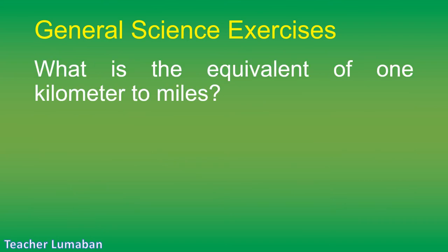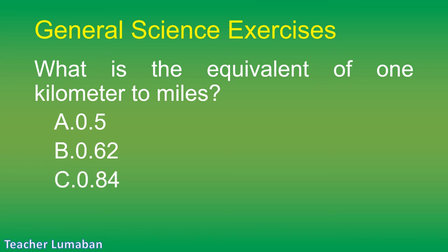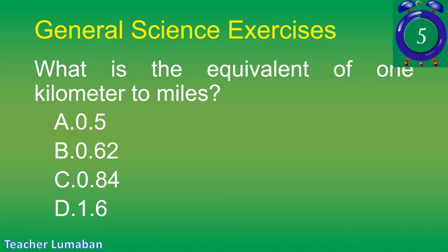What is the equivalent of 1 kilometer to miles? Letter A: 0.5. Letter B: 0.62. Letter C: 0.84. Letter D: 1.6.